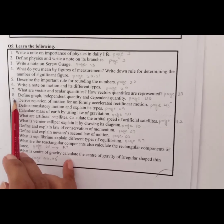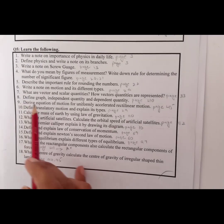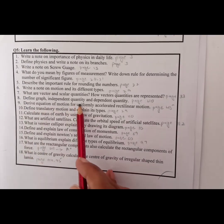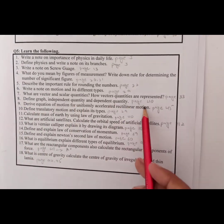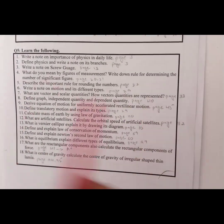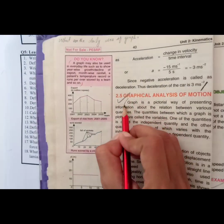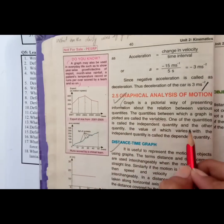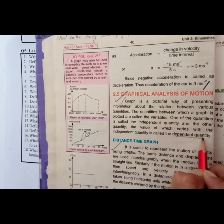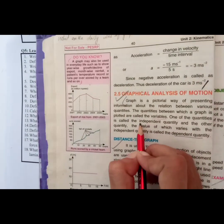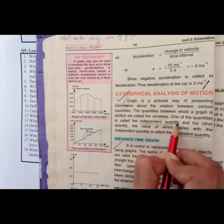Now we will move to question number 8: define graph, independent quantity, and dependent quantity. Open up page number 14. Here we have the definition of graph, dependent quantity, and independent quantity.